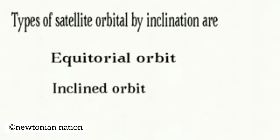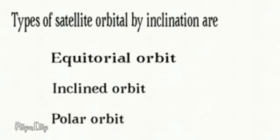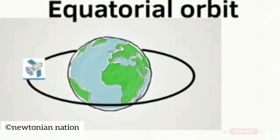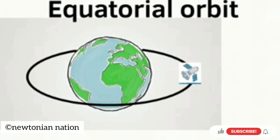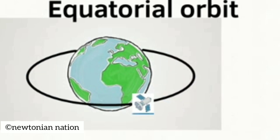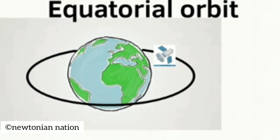Types of satellite orbit by inclination are: Equatorial Orbit, Inclined Orbit, and Polar Orbit. Equatorial Orbit — a satellite usually rotates parallel to the equator in a circular path; it has an angle of inclination of 0 degrees.